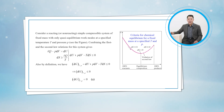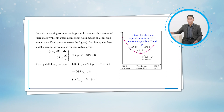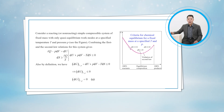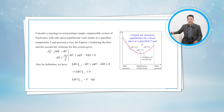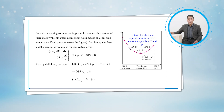The reaction stops and chemical equilibrium is established when the Gibbs function attains a minimum value. Therefore, the criterion for chemical equilibrium can be expressed as: a chemical reaction at a specified temperature and pressure cannot proceed in the direction of increasing Gibbs function, since this would be a violation of the second law of thermodynamics. If the temperature or pressure is changed, the reaction system will assume a different equilibrium state, which is the state of the minimum Gibbs function at the new temperature or pressure.